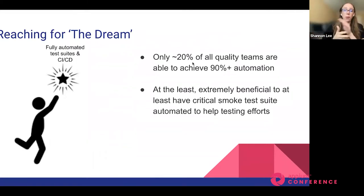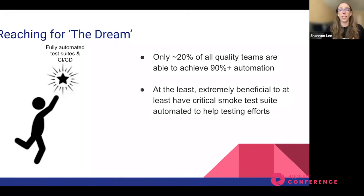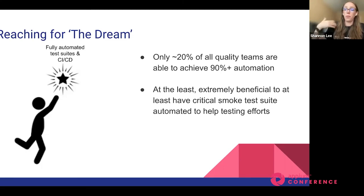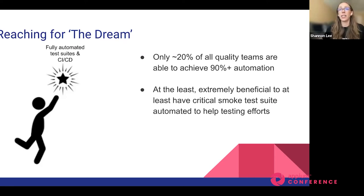We all share one main goal: reaching for the dream — a fully automated test suite where you can achieve continuous integration and continuous deployment. You don't want to spend so much time manually testing every regression cycle. You want reliable test scripts so you can focus on additional testing, because the testing checklist is never-ending. Testing ends up being the biggest bottleneck in the DevOps cycle because we want to hold on to quality while everything is so fast-paced — next release, next release, next release.